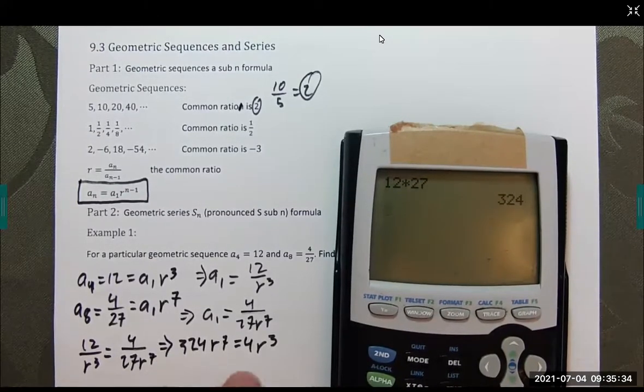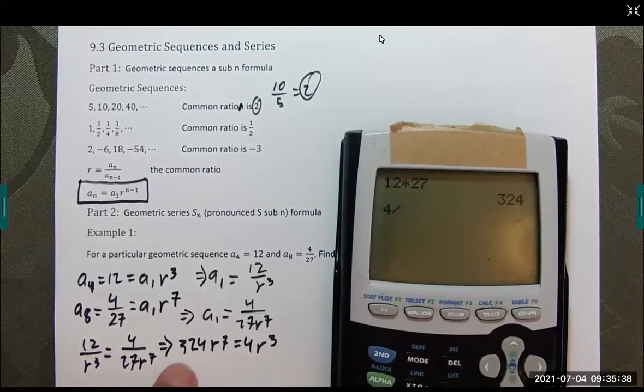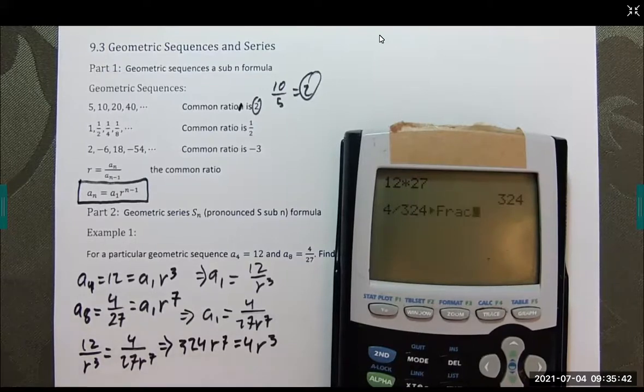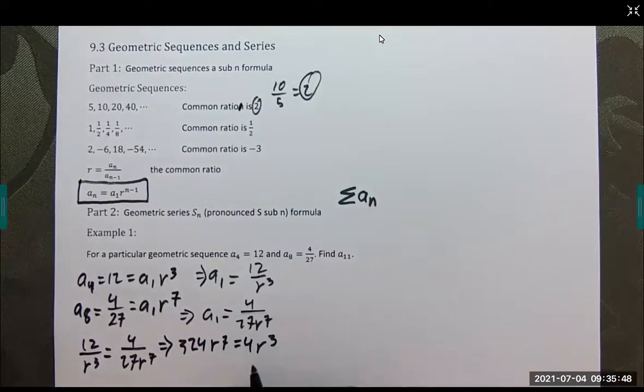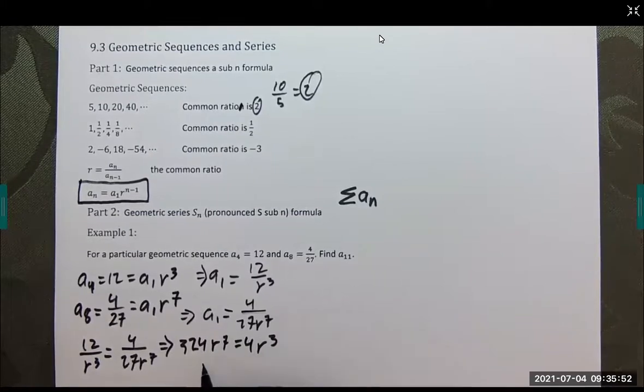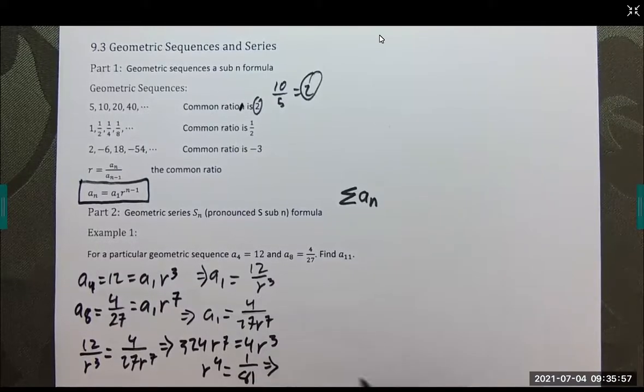12 over r to the 3rd equals 4 over 27 r to the 7th. We can cross multiply. This becomes 324 r to the 7th equals 4 r to the 3rd. Let's divide by 4 and by 324 to get 1 over 81.